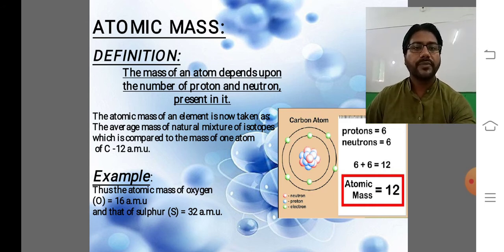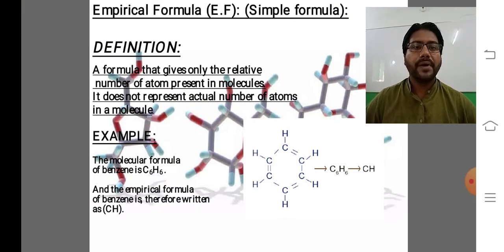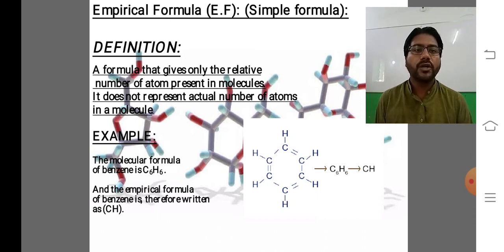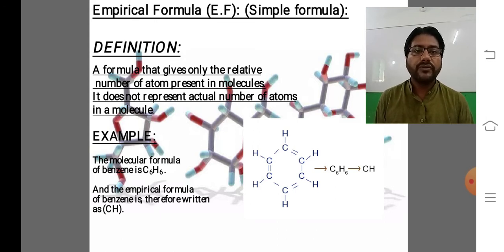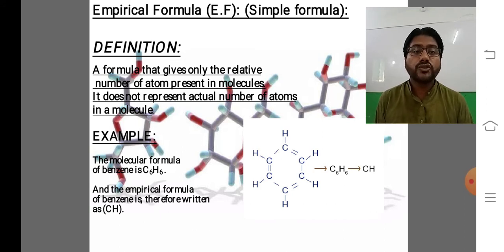Now let's look at our next topic: empirical formula. Empirical formula is also called simple formula. It is a formula that gives only the relative number of atoms present in molecules. It does not represent the actual number of atoms in molecules.